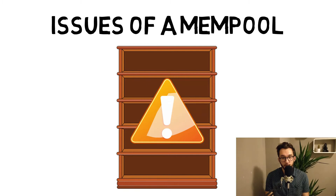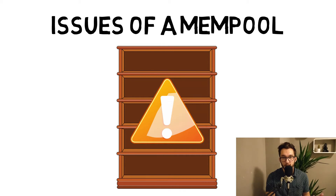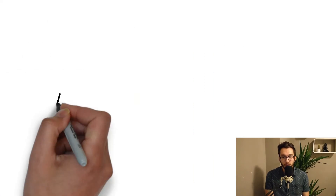People had to pay high fees, making micro-transactions nearly impossible — you paid much more in fees than the value of what you were buying. This is an issue we faced when a lot of people were using Bitcoin at the same time. That's also a reason why we have second-layer solutions or forks like Bitcoin Cash, which we will talk about later.